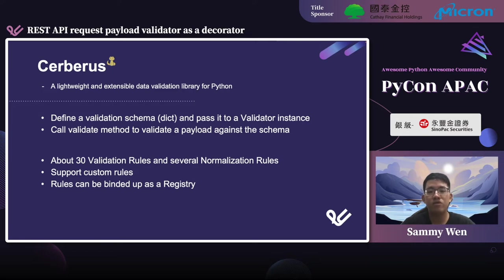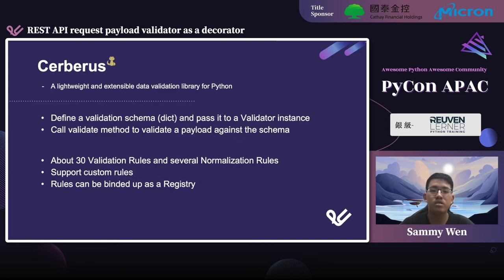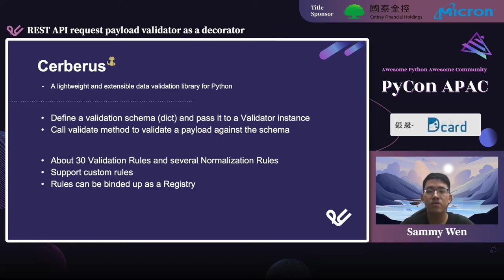Here are some advantages of this library I'd like to mention. The most important thing I like is that it provides a lot of validation rules and some normalization rules. It's fairly easy to use since the documentation is pretty clear. It also supports most data types. As for extensibility and reusability, Cerberus supports custom rules, rule binding, and inheriting. So it's a pretty suitable library for us to use. In the live demo later, I'm combining the decorator I introduced with Cerberus.